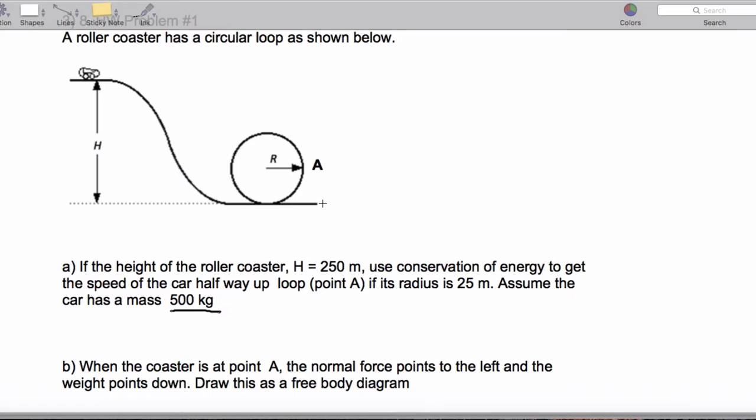Now what we're going to do is get the speed of the car halfway up this loop here using conservation of energy. So let's be careful. First, we have all gravitational energy to start with.